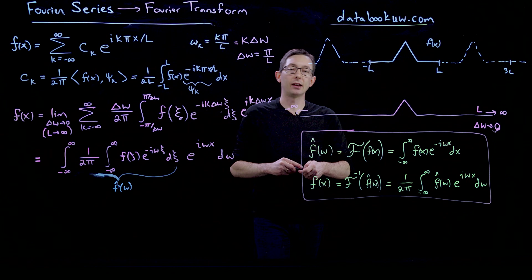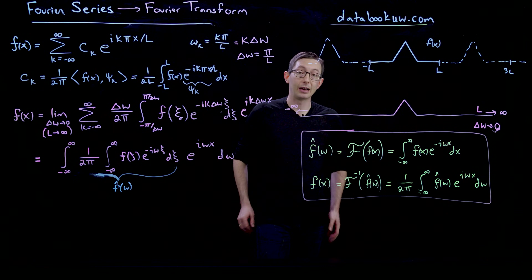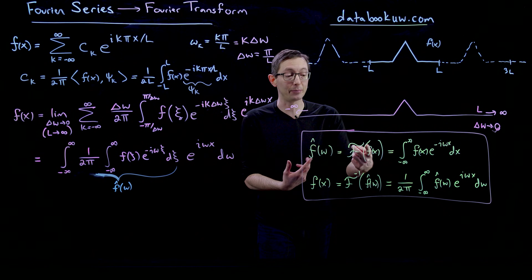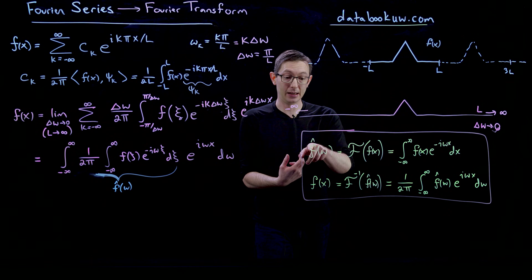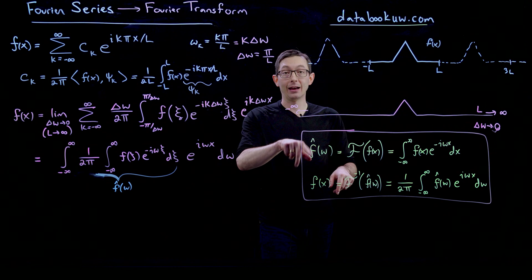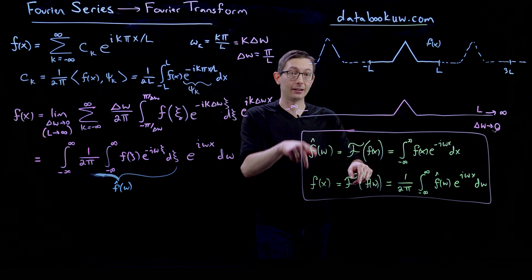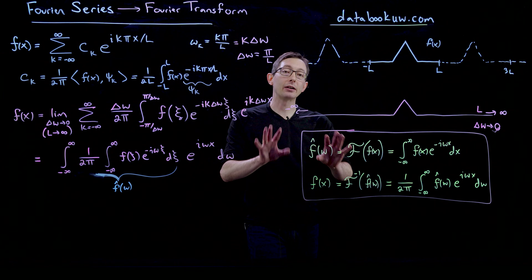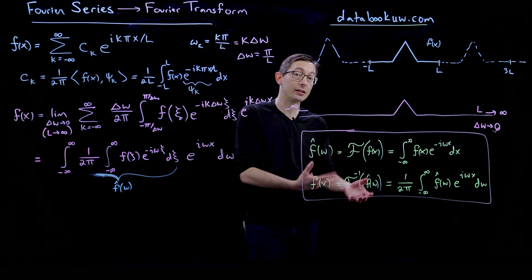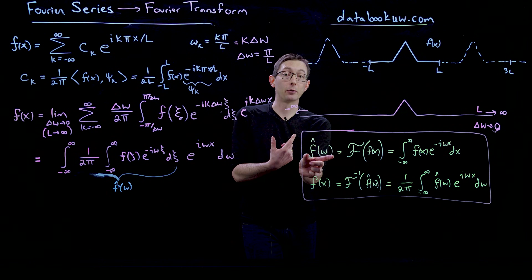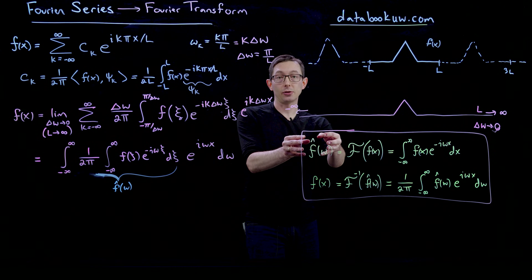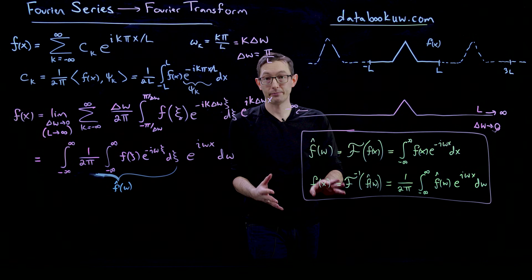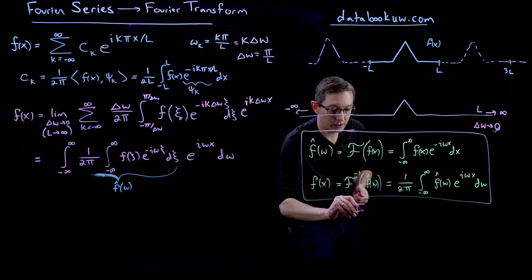There are really nice properties of this Fourier transform operator. In particular, it's easy to compute derivatives in Fourier space: in f̂ space, the derivative just becomes iω·f̂ — that's the Fourier transform of f'. This makes it very useful for solving differential equations; it's often easier to solve partial differential equations in Fourier space, then inverse Fourier transform back to physical space.